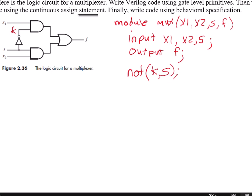So I did the not gate. Now I'll do an and gate. I'll do this bottom and gate. I'll call the output of that bottom and gate g. And so I put the output first, g, comma, and then the two inputs, s, comma, x2, semicolon.